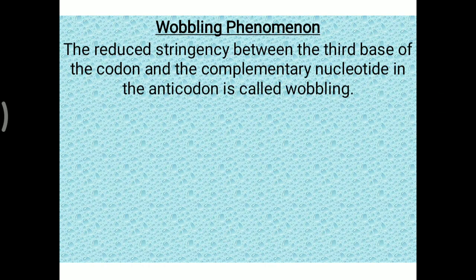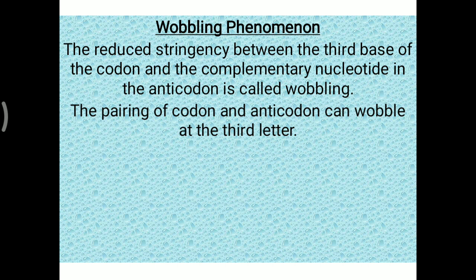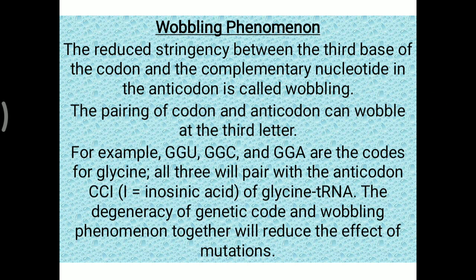Wobbling phenomenon: the reduced stringency between the third base of the codon and the complementary nucleotide in the anticodon is called the wobbling phenomenon. The pairing of codon and anticodon can wobble at the third position. For example, GGU, GGC, and GGA are all codons for glycine.